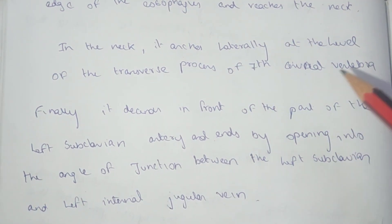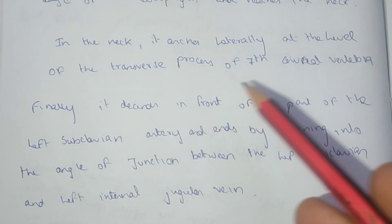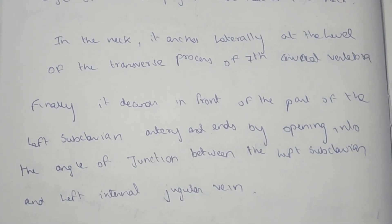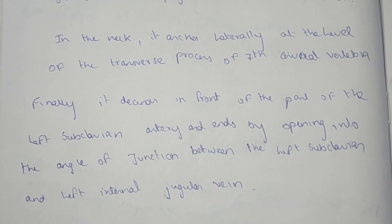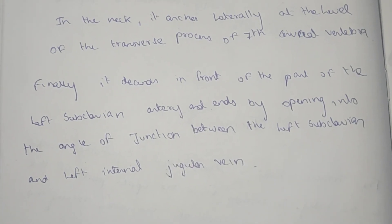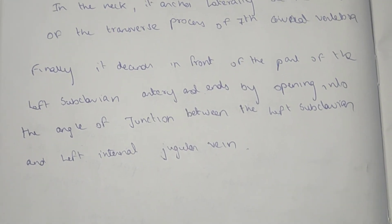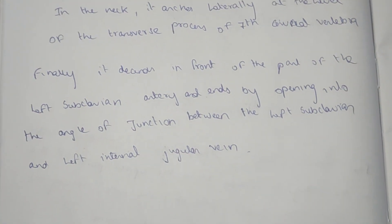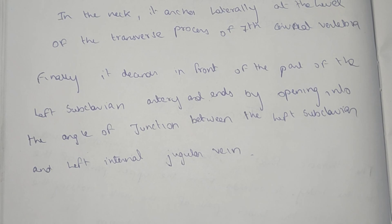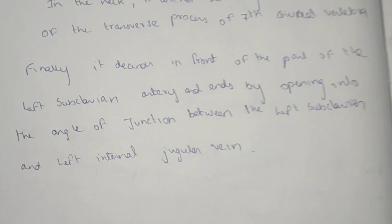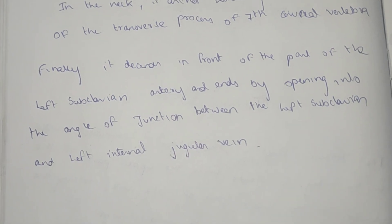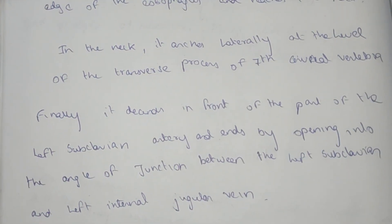In the neck, it arches laterally at the level of the transverse process of the 7th cervical vertebra. Finally, it descends in front of the left subclavian artery and drains at the junction between the left subclavian and the left internal jugular vein.